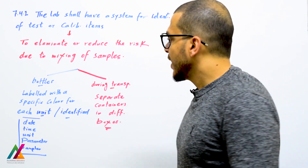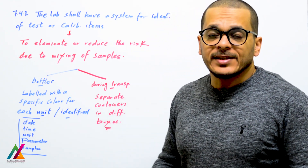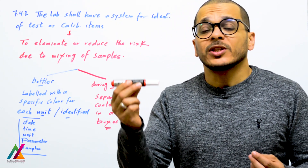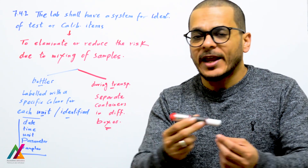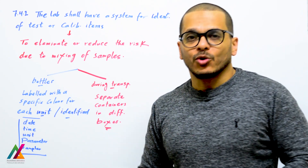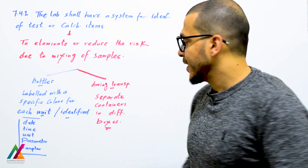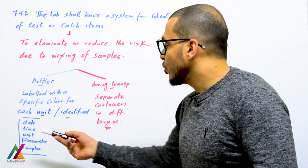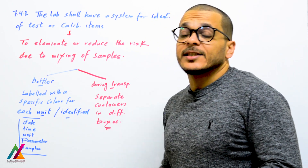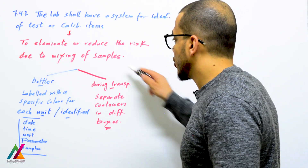For example, when collecting samples in containers, the bottles shall be labeled with a specific color for each unit in the lab — such as microbiology, inorganic, and organic labs. Each unit has a specific color so every person can easily identify which label belongs to which unit. The label shall also include date, time, unit, parameters to be collected, and the initials of the sampler.